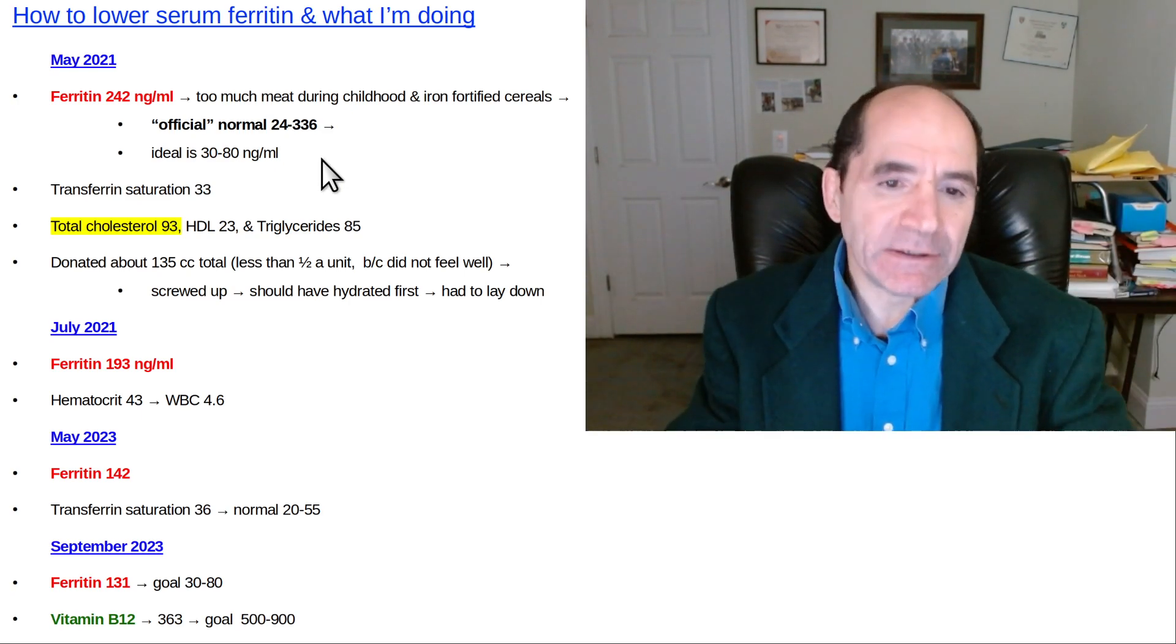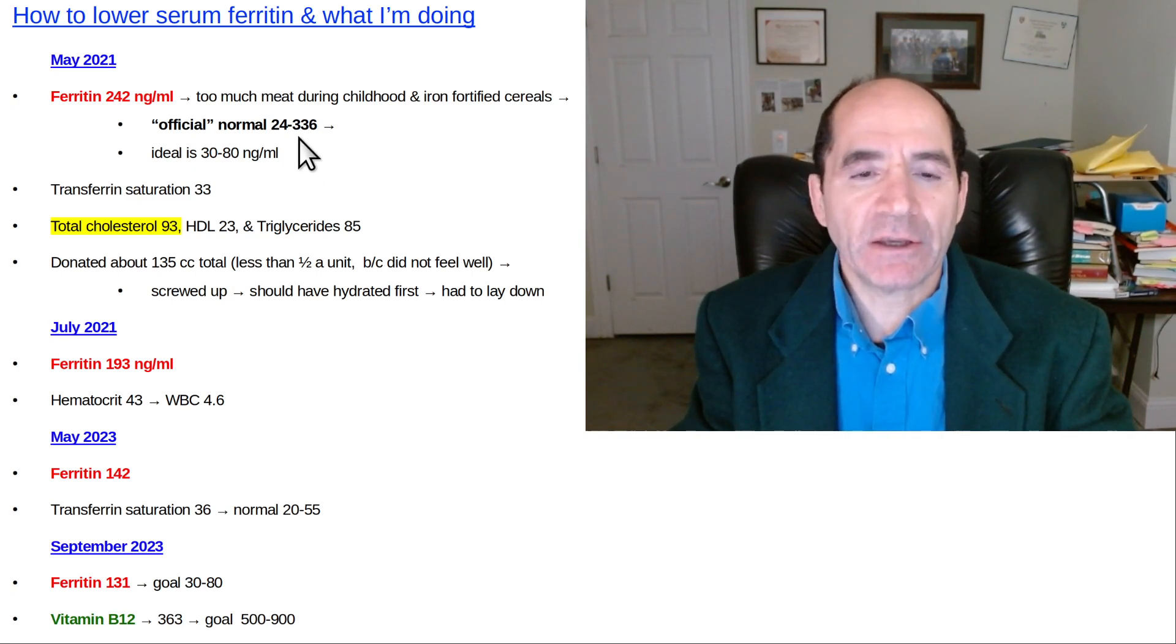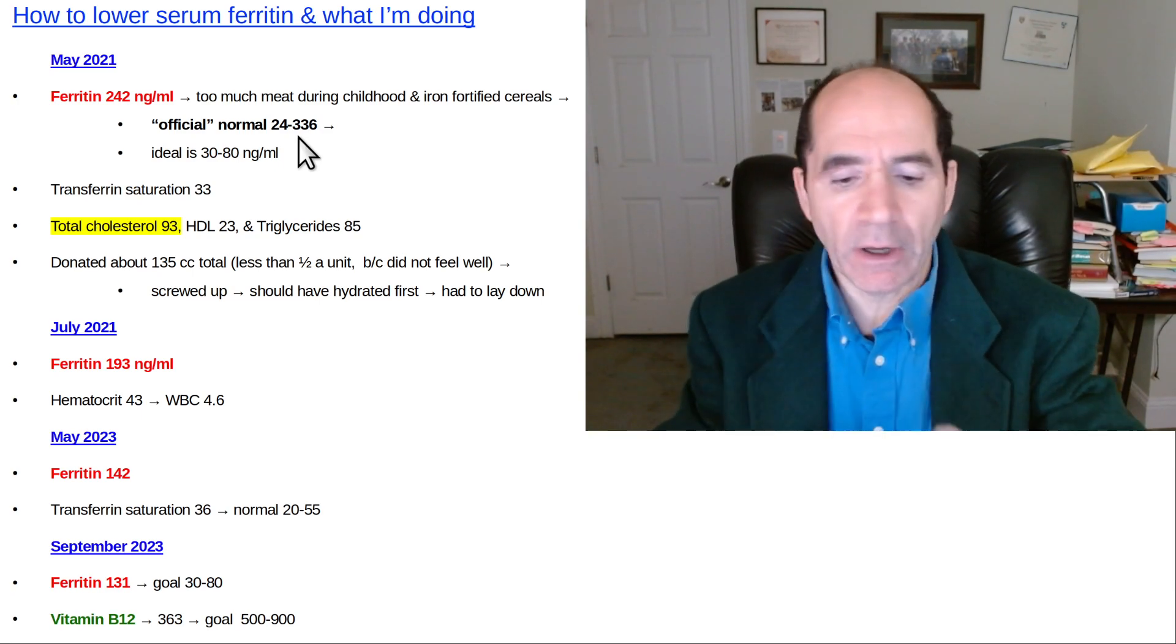About 30 to 80 is a reasonable amount. If you go to the blood lab, they're going to tell you normal is about 24 to 336.